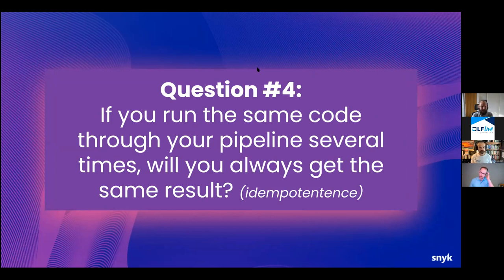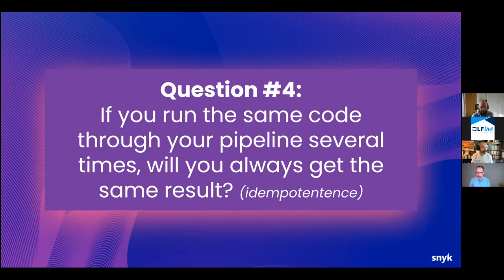The next question is a challenge probably for any kind of code, but especially for IaC: if you are running these things through pipelines, can you predict the outcome? Will you get the same result every time you run the same code? That's idempotence. Is your infrastructure as code idempotent — can you predict what's going to happen reliably? For example, a simple toggle: if you started with yes and toggle it, your answer would be no. If you started with no, your answer would be yes. Therefore it's not predictable.